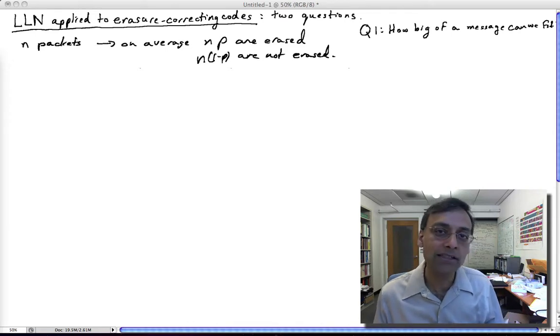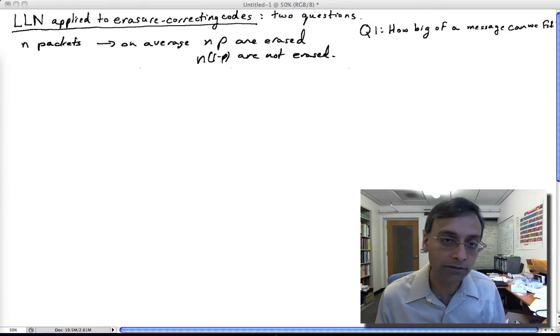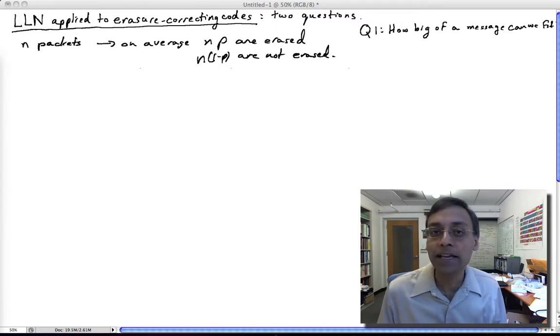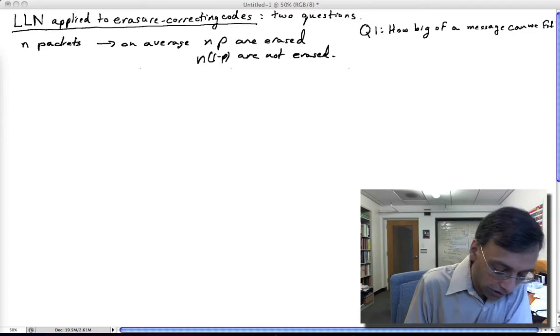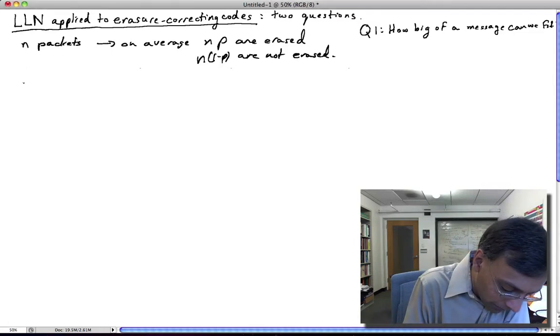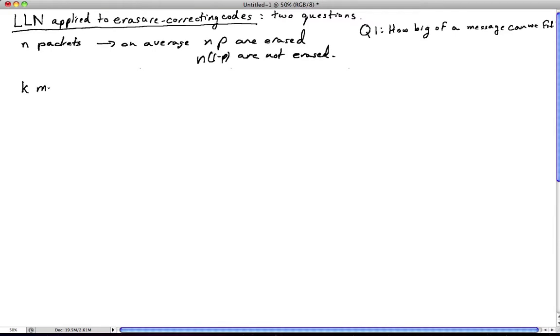Then the idea is that although some points might be erased, if the receiver can get enough non-erased points, then it's able to reconstruct the polynomial and hence the message that was embedded in the polynomial. So let's make sure we understand what the order of things is. We have k messages which get turned into a degree k-1 polynomial that gets turned into a codeword by evaluating at, say, n points.